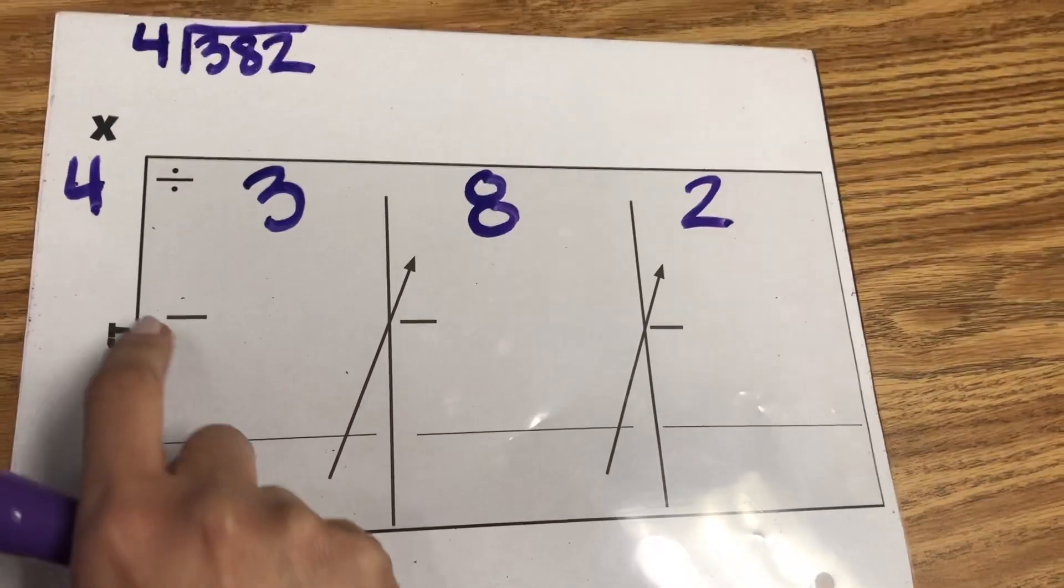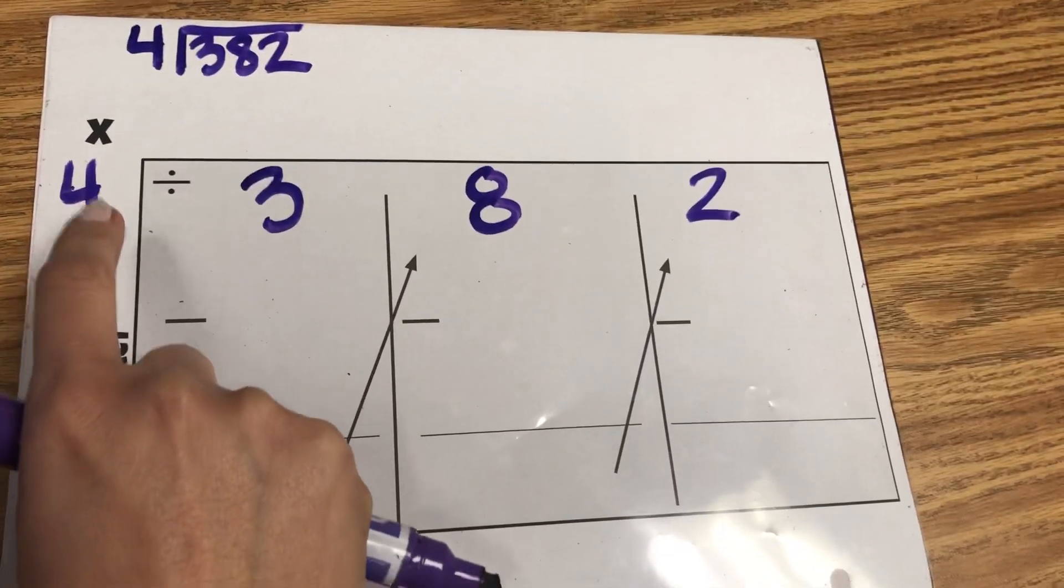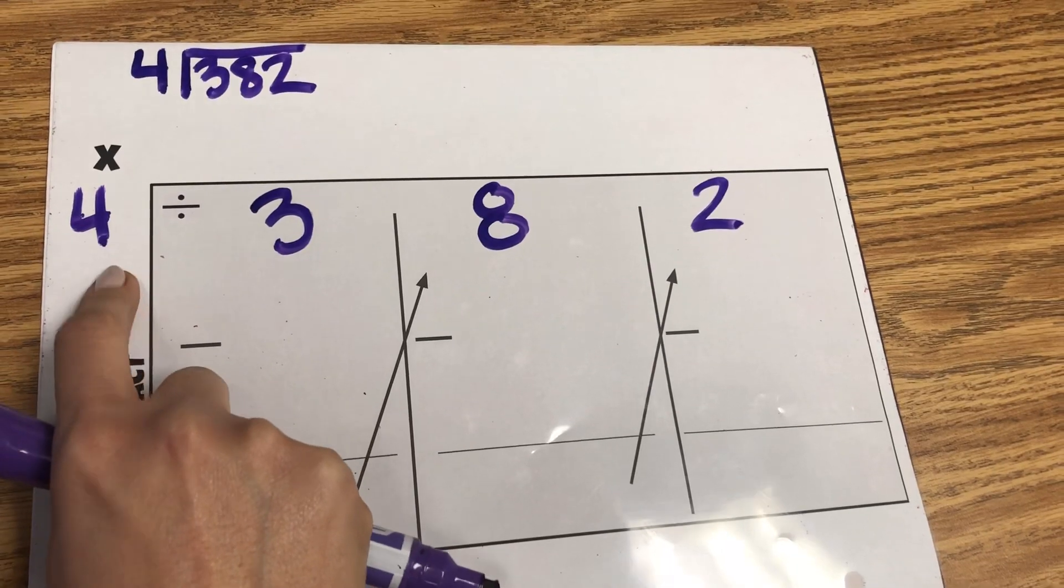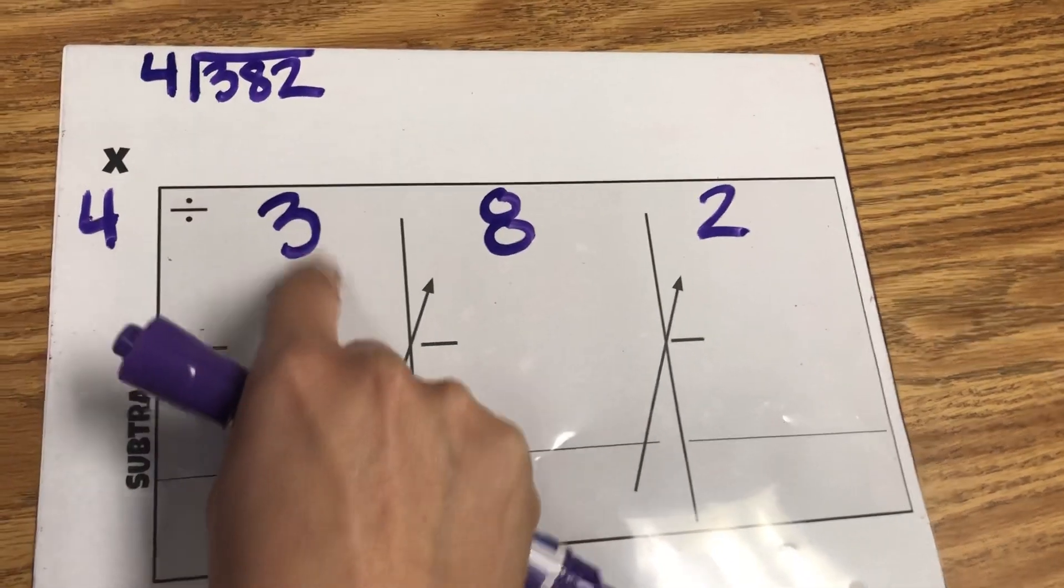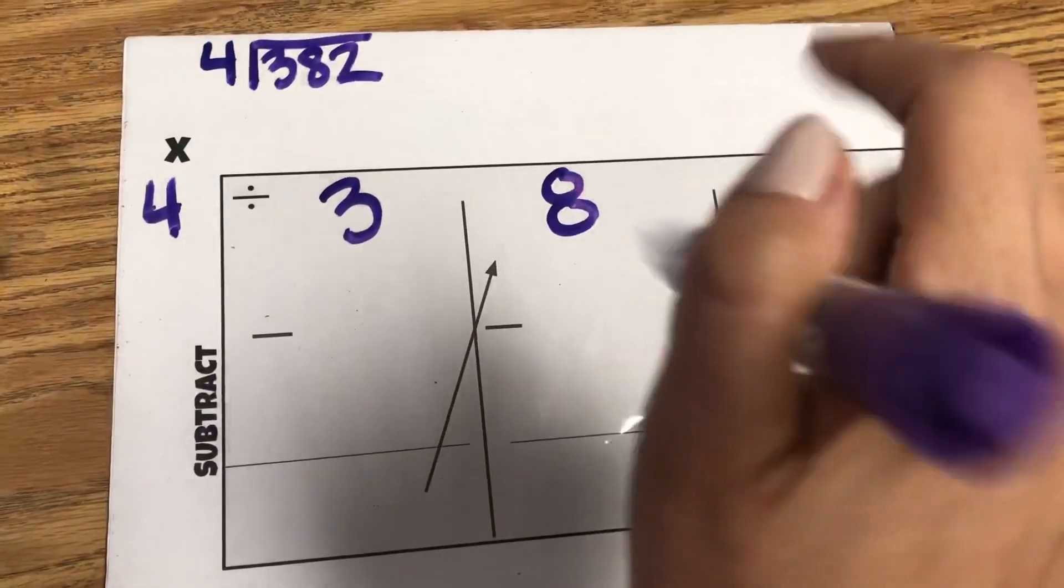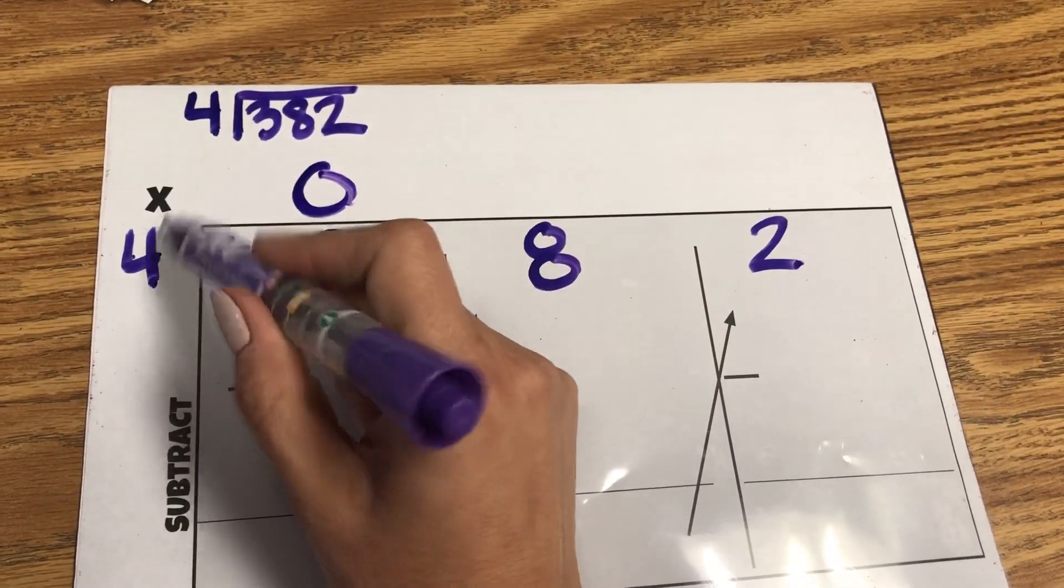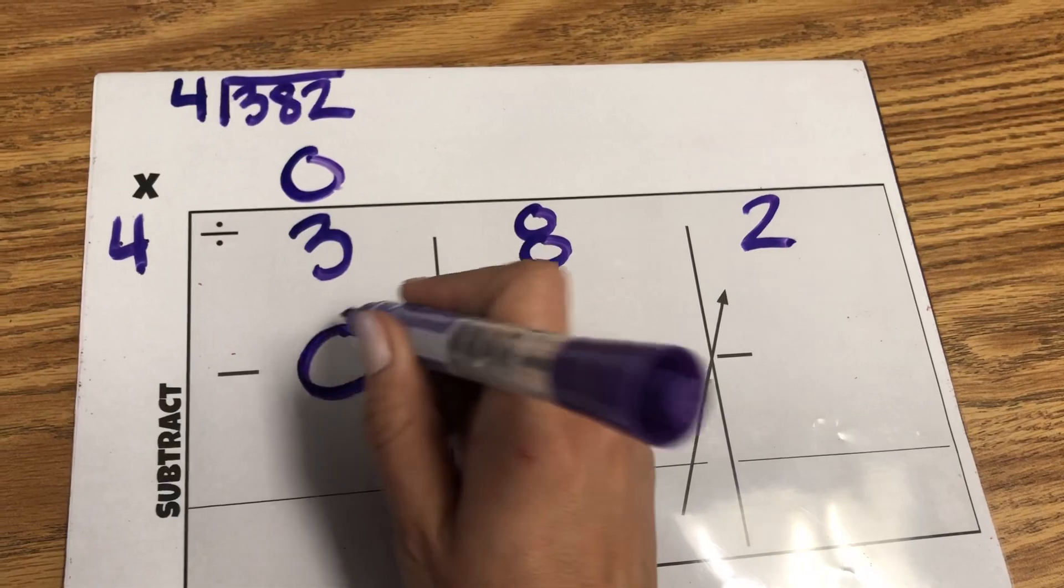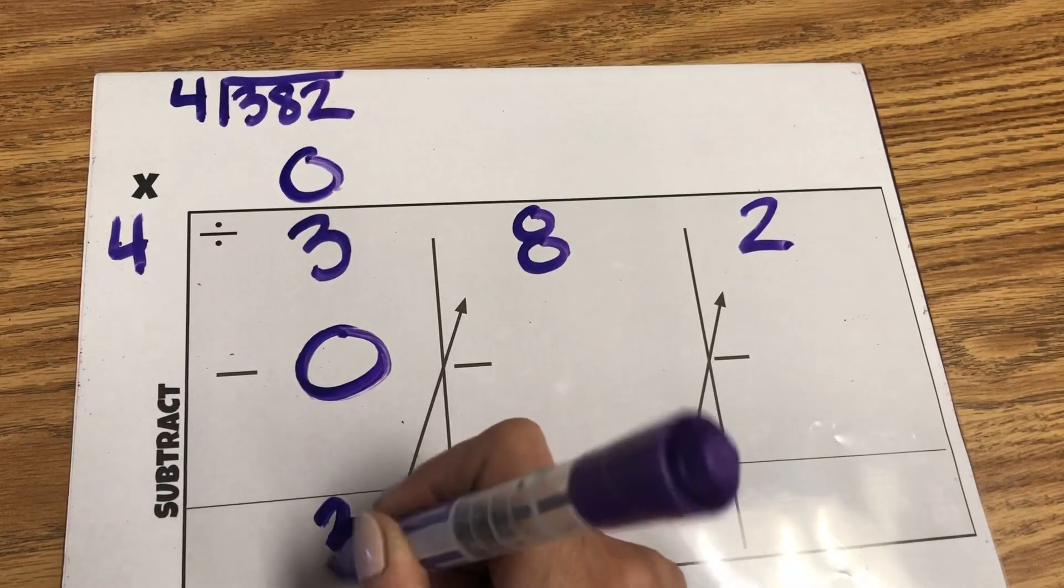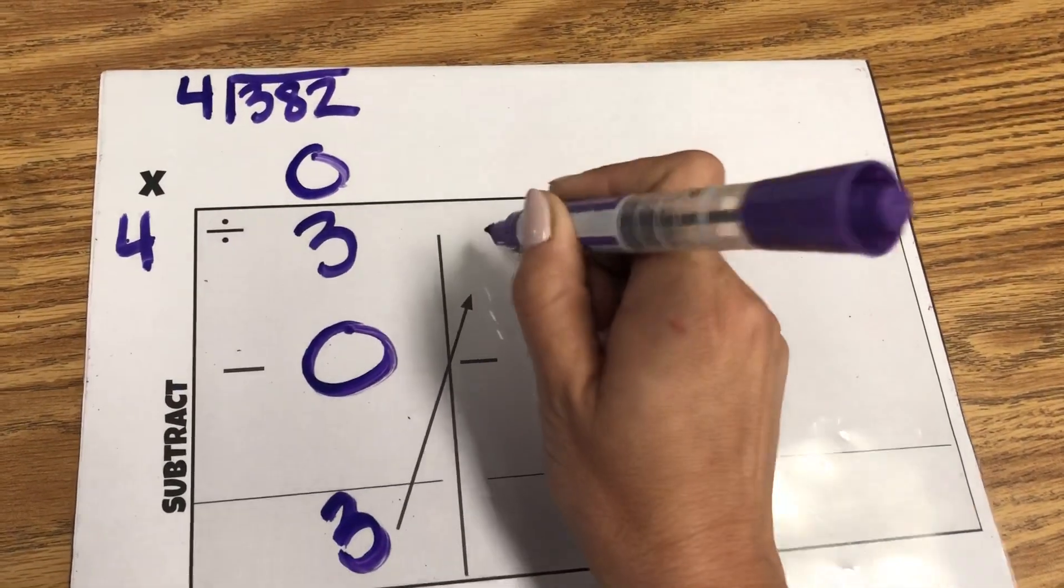We're going to start with the first number. The kids need to decide how many times 4 goes into 3, or how many groups of 4 are in 3, and for this one it is 0. So they do 0 times 4 is 0. Subtract. This number down here they bring it up to the top.